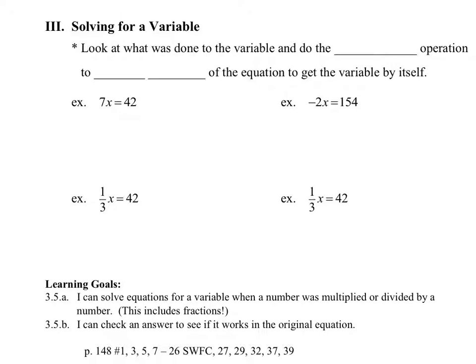Okay, solving for a variable. So this is the part that's review. So same as yesterday's notes, if you're solving for a variable, look at what was done to the variable and do the inverse. Inverse is the official math word. But you may want to write opposite above it. So the opposite operation to, nice, both sides. Because if you multiply one side by 2, you have to multiply the other side by 2 to make it equal.